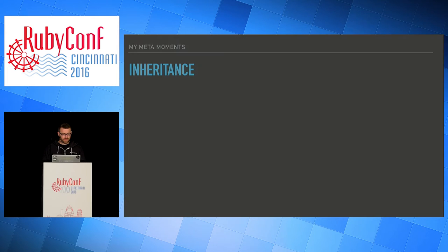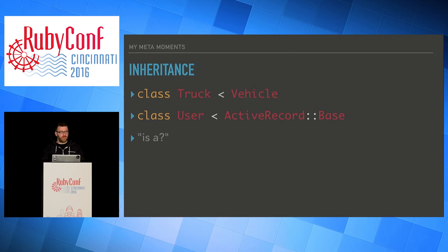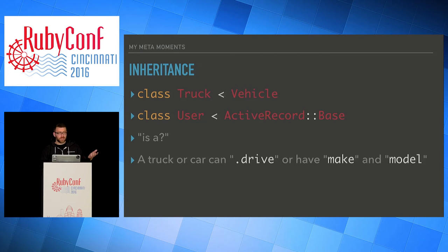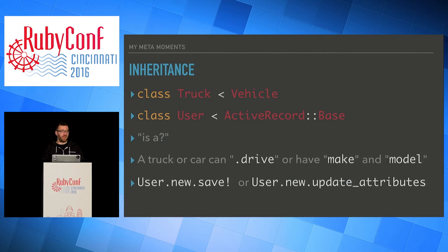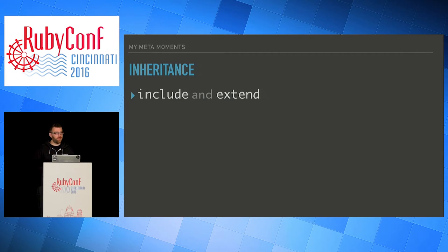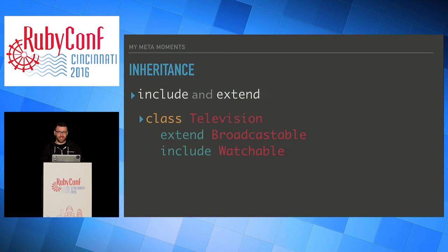Next is inheritance. A truck is a type of vehicle — most of our users probably inherit from ActiveRecord. You may have heard the is-a trick: if something is-a something else, it inherits. Because of this, like any vehicle, a truck can drive, has a make and model, but it can also tow. A user will have save or update_attributes that come from ActiveRecord. What I didn't know about inheritance is that when you use include and extend, you're actually dealing with inheritance — this is changing the inheritance chain. I used to think this was composition because I was composing modules, but that's wrong.